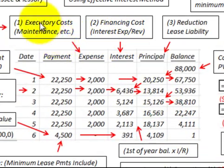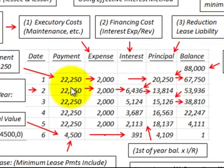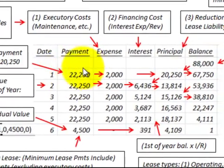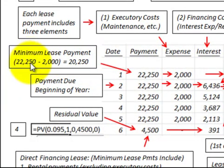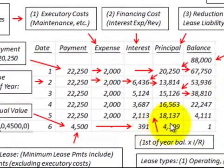Looking at our amortization schedule, we have executory costs — maintenance costs — then the financing cost, which is the interest expense or revenue, and then the reduction of lease liability, which is the principal. For our minimum lease payments, the payment amount is $22,250 with an executory cost of $2,000, so the minimum lease payment is $20,250. That's simply the lease payment of $22,250 less the $2,000 executory cost. The payment is made at the beginning of the year.